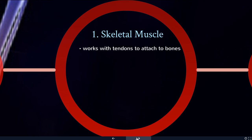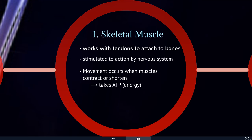Skeletal muscle is going to work with tendons to attach to bones. It's stimulated to action by the nervous system — it gets a signal that says it's time to contract. Movement actually occurs when muscles contract or shorten. This takes ATP; fibers pull against each other in the muscle and pull against the bone, and that creates movement.